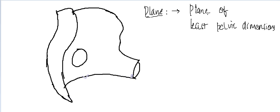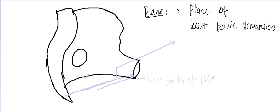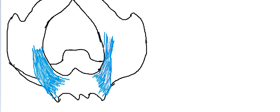So the boundaries of the plane of least pelvic dimensions are: lower border of pubic symphysis to the fifth sacral vertebrae, meeting the ischial spine in the middle. Now let us learn about the diameters of the pelvic outlet.